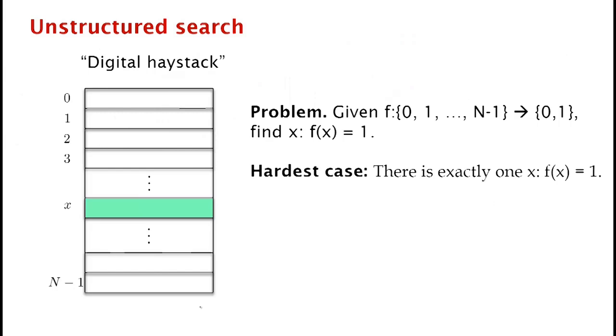In this video I'm going to describe the steps of Grover's algorithm and why it runs in square root of n steps. In the next video I'll show how we actually implement the steps. Here's the problem: we are given a table with capital N entries, one of which is special, and we want to find that special entry.